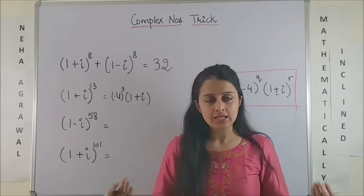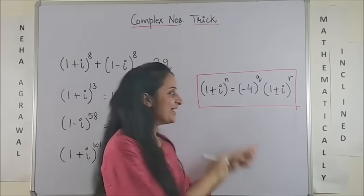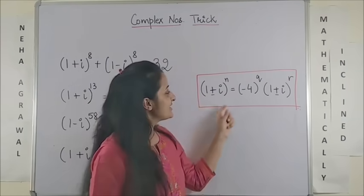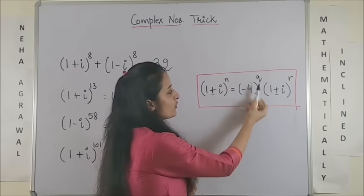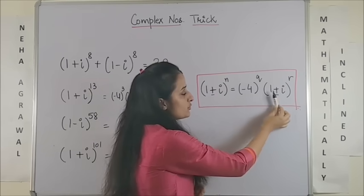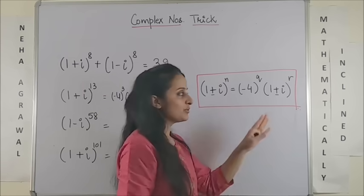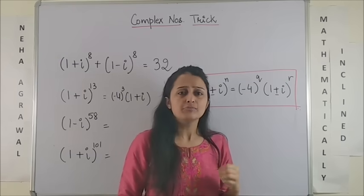All you need to do is take a deep breath and apply this formula which says it will be minus 4 raised to power q into 1 plus or minus iota raised to power r. Now you must be wondering what are these q and r.